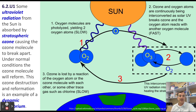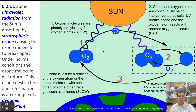That formation, destruction, and reformation happens over and over again, trillions of times every day in Earth's stratosphere, in a dynamic equilibrium. This means the overall concentration of ozone in the stratosphere remains constant, even though individual diatomic oxygen and ozone molecules are constantly being formed and broken apart and reformed. The rate of ozone formation is equal to the rate of ozone destruction.